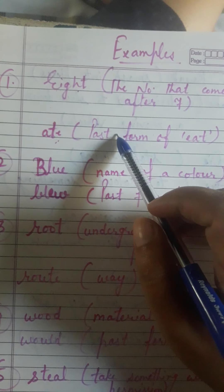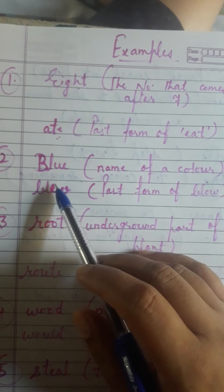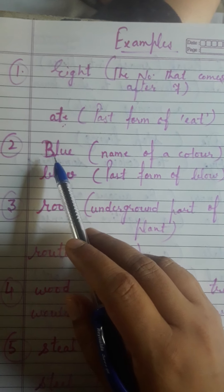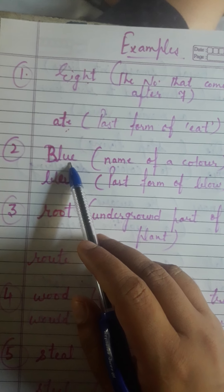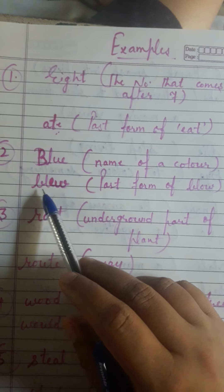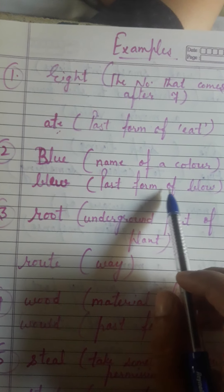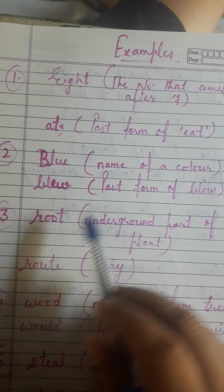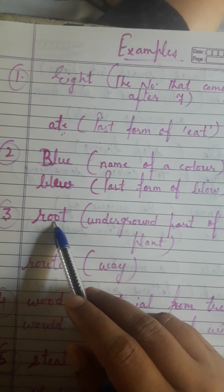So homophones are words that have different spellings and different meanings but the sound is same. Here are some more examples. B-L-U-E, blue, is a color. B-L-E-W, blew, is the past form of blow.